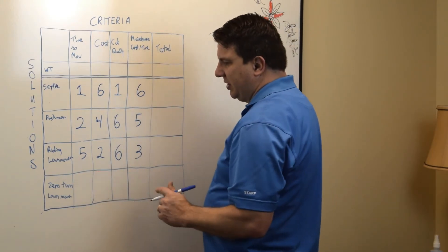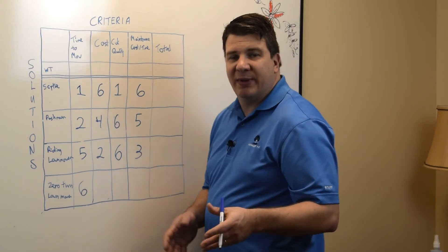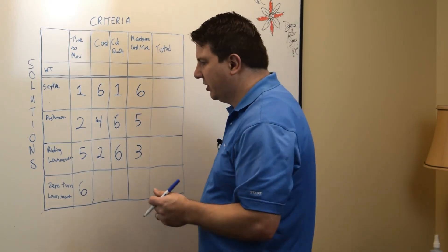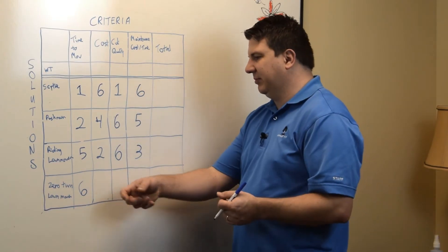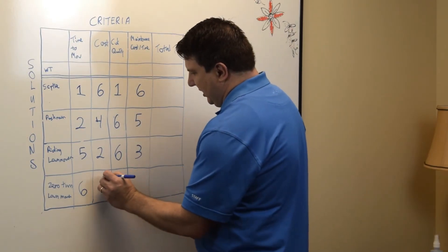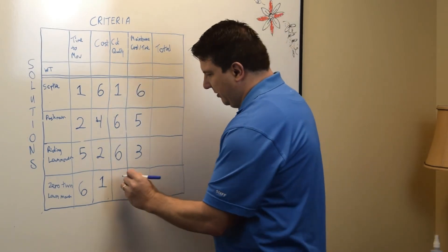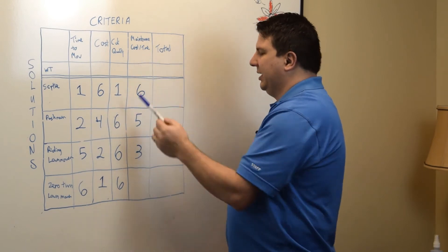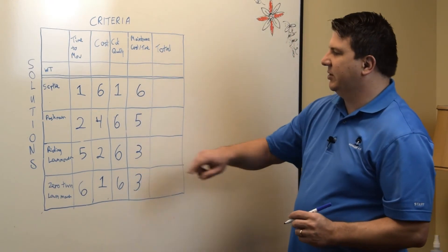Zero turn lawnmower time to mow — it's going to be our fastest option, because we can get into tighter spaces more easily and turn right back around rather than making a bigger turn. That little bit of optimization gives us a slight advantage over a standard riding lawnmower, so let's give that a six. The cost is going to be the worst one — it's going to be more expensive, so we'll give that a one. Cut quality once again is going to be a six. Maintenance cost and time is probably going to be the same as the riding lawnmower, so we'll give that a three.